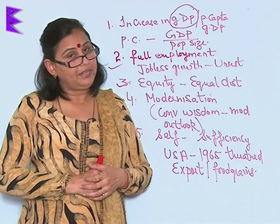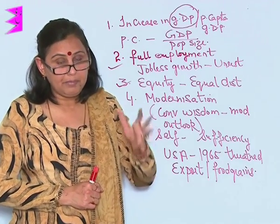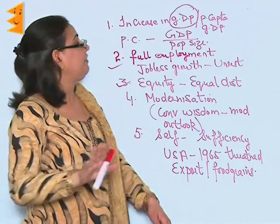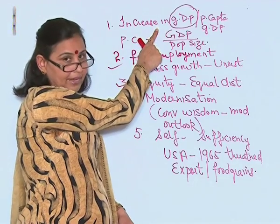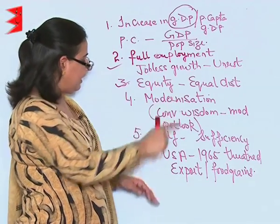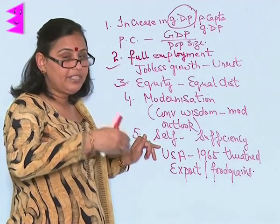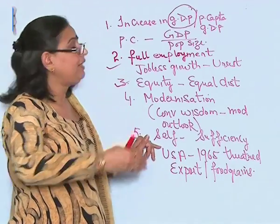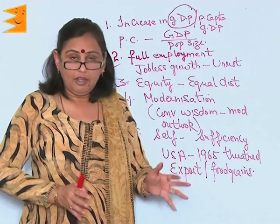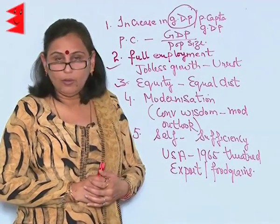If we have to import food grains, it is a very grim situation. So, self-sufficiency is another major long-term goal. To summarize, there are five long-term goals of India: increase in GDP and per capita GDP, full employment, equity, modernization, and self-sufficiency. The planning commission is always working towards achieving these long-term goals in all the five-year plans. The five-year plans can have short-term goals, but these long-term goals are always on the agenda.